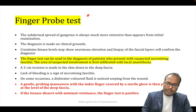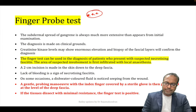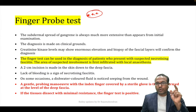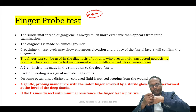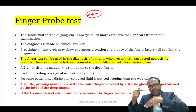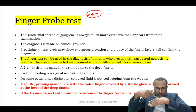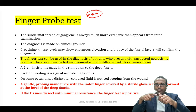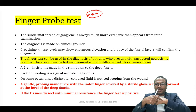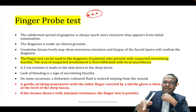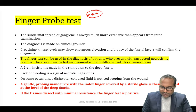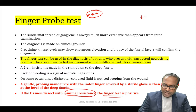A very important update is the finger probe test, used to diagnose necrotizing fasciitis. You make a 2 cm incision, put a gloved finger inside, and at the level of deep fascia the finger enters with minimal resistance. This is known as a positive finger test. This PDF is already shared in the Surgery 6R Telegram channel.